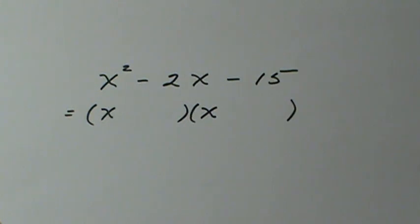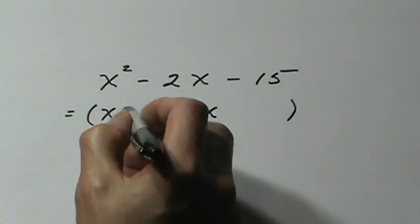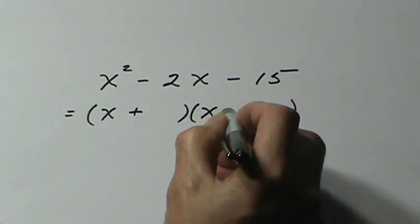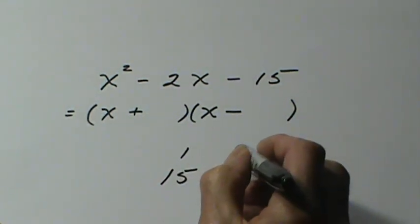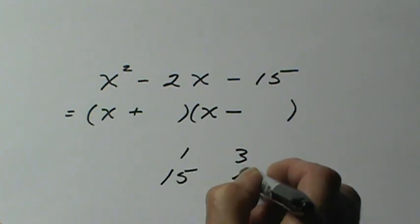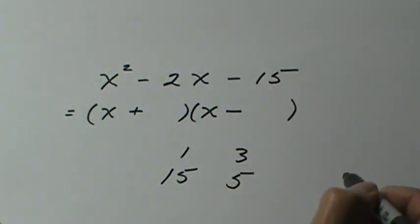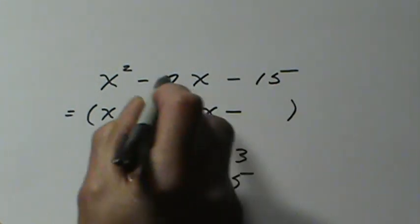And now the minus 6x and the plus 1x will give us the minus 5x in the middle. One last example of that type: a negative sign on the end tells us the signs are different. We need factors of 15: 1 and 15, 3 and 5.